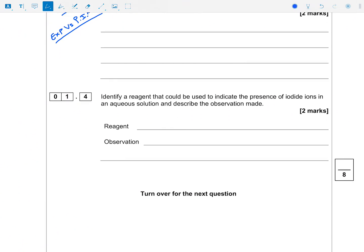Last one, 1.4 - identify a reagent that could be used to indicate the presence of iodide ions, so we need a reagent, and describe the observation made. So iodide ions in solution, how do we test with them, what do we see? Two marks there, nice and straightforward, we've been using that test for a little while now.